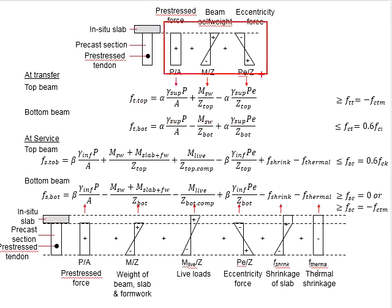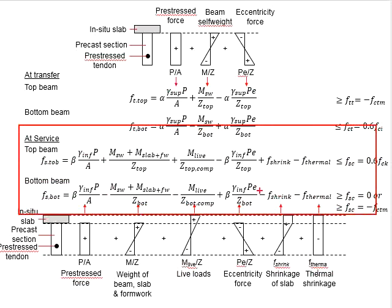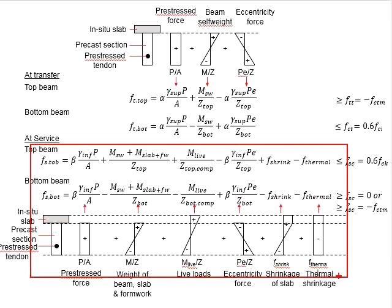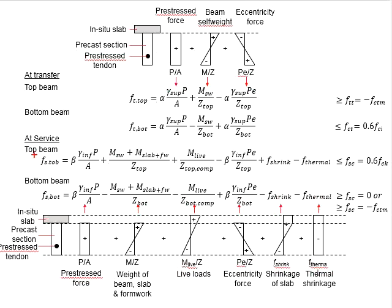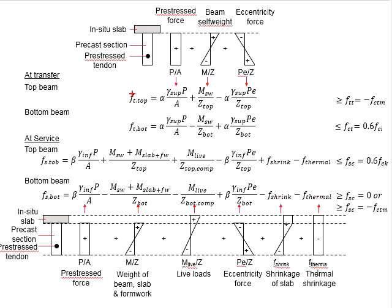These equations and the stress plots are identical to what you have learned in the previous chapters, as at this stage the composite action is yet to be in place. The critical failure at that particular stage will be tension for the top of the beam and compression for the bottom of the beam. With that, you are able to derive the two equations in respect to the allowable stress limit. Next, we will look into the service stage. These equations and this stress plot diagram are obviously different from the ones learned in previous chapters. This is where the composite action takes place and there are more parameters to be considered. First, let us settle the simple one.